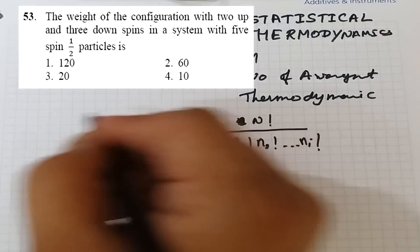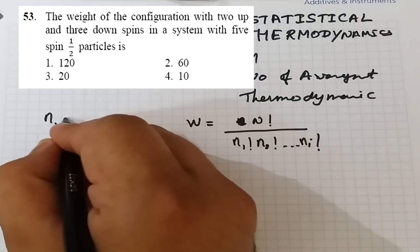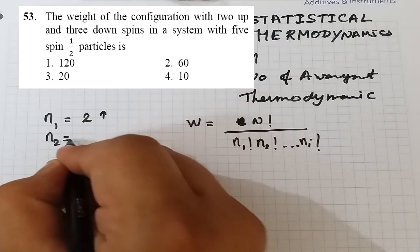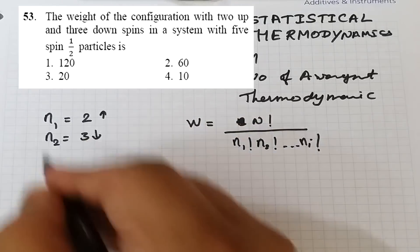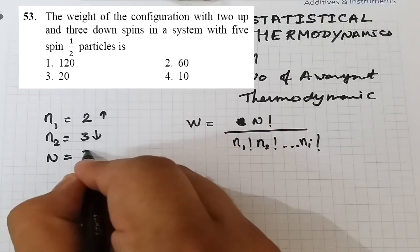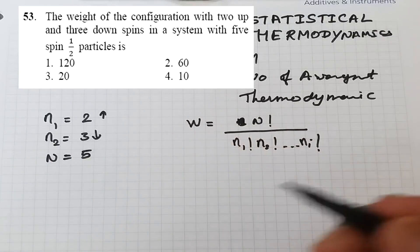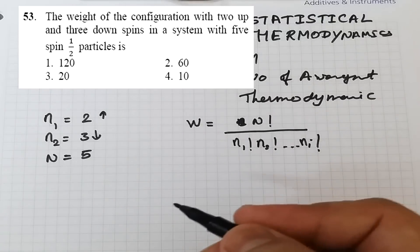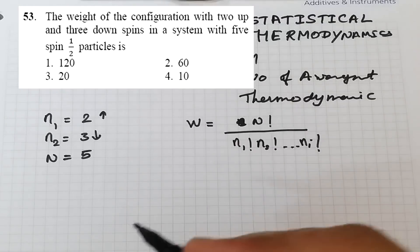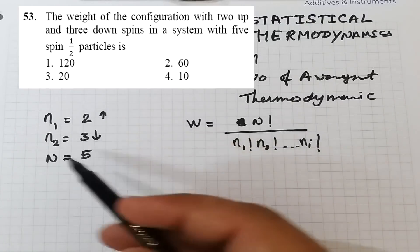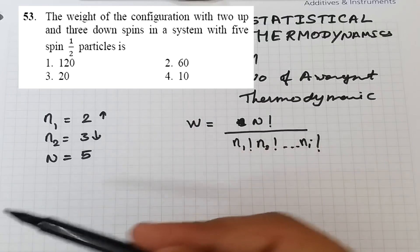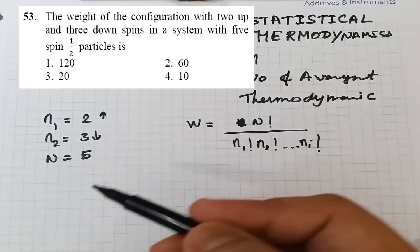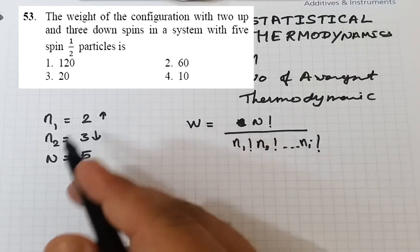We are given that n₁ (up spin) = 2, n₂ (down spin) = 3, and total N = 5. The options are 120, 60, 20, and 10. Since 120 and 60 are very large compared to our numbers, we can remove those options. The answer could be either 20 or 10.